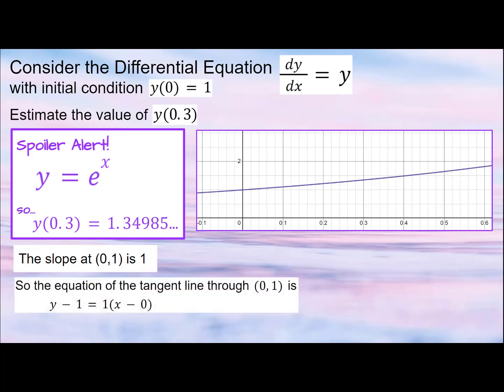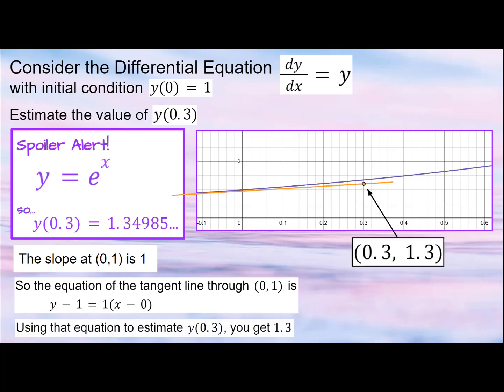So the equation is y minus 1 equals 1(x minus 0). And that orange tangent line is approximating the y value at 0.3 to be 1.3. That's not a bad estimate at all. But keep in mind, 0.3 is very close to 0. So using the line that goes through 0 is not actually a bad estimate.